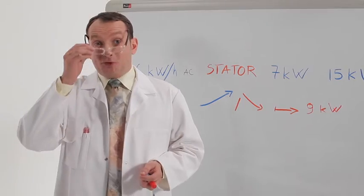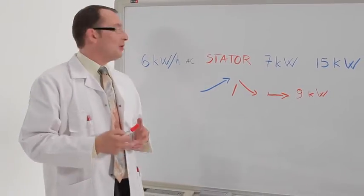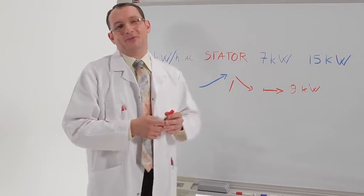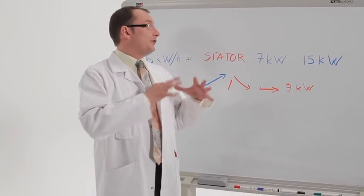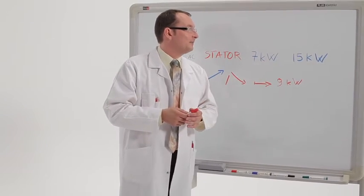Regarding the range, let us take the example of a Twizy battery with a capacity of six kilowatt-hours. This supplies the stator of the electrical motor with an alternating current, delivering a continuous power of seven kilowatts and a peak power of 15 kilowatts.